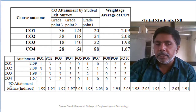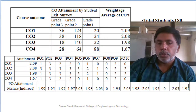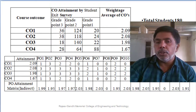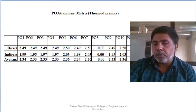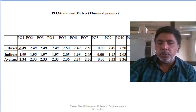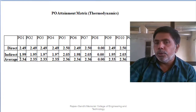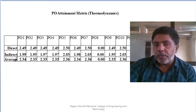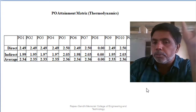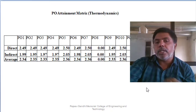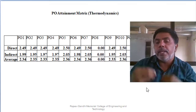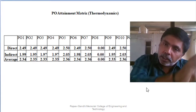For all four COs, indirect method attainment weightage is calculated. Then the final PO attainment combines direct and indirect: (70% × direct method) + (30% × indirect method). This gives the average program outcome attainment for the thermodynamics subject. If the benchmark is above 2 and all POs exceed 2, the subject's attainment is satisfactory.